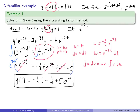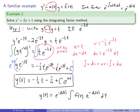So do you see why it's easier to learn the method than to memorize that complicated formula? Just to remind you, the formula was y(t) = e^(A(t)) · ∫f(t)·e^(−A(t)) dt. Instead, just put it in standard form, circle that coefficient, compute e to the integral of that — that's your integrating factor — multiply both sides, collapse the product rule in reverse, and integrate and solve.